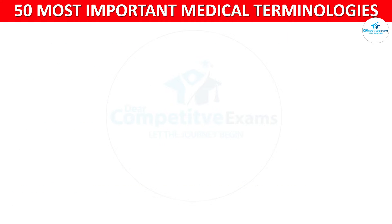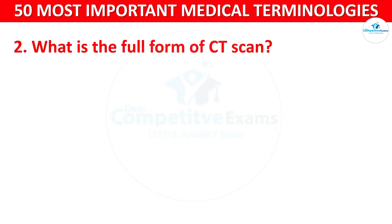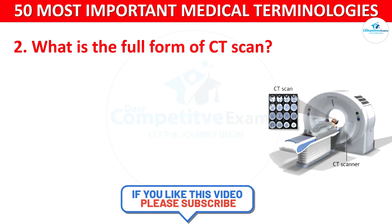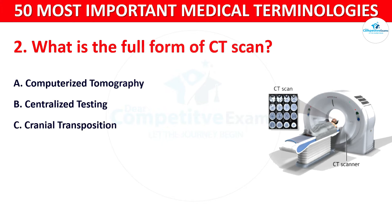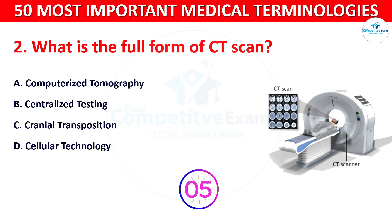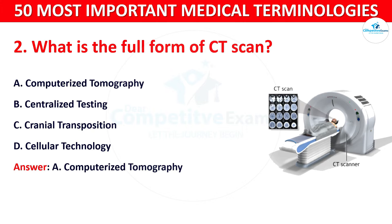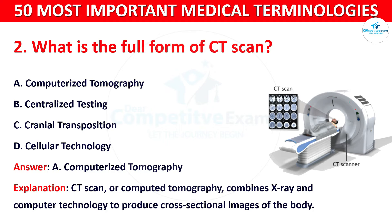Question number 2: What is the full form of CT scan? Your options are: A) Computerized Tomography, B) Centralized Testing, C) Cranial Transposition, or D) Cellular Technology. The correct answer is Computerized Tomography. CT scan combines X-ray and computer technology to produce cross-sectional images of the body.